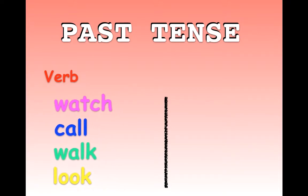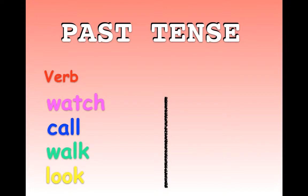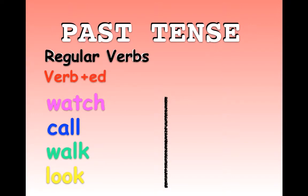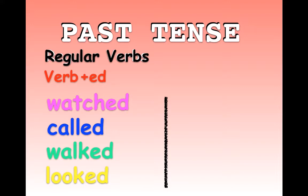Now I have: watch, call, walk, look. The next step for these verbs is to add '-ed' at the end. We add '-ed' to get: watched, called, walked, and looked. These verbs are what we call regular verbs. If a verb is a regular verb, all you need to do is add '-ed' onto the end, and for many verbs that's what you would do.